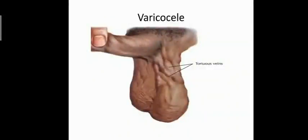Assalamu alaikum wa rahmatullahi wa barakatuh. This lecture is a combination of the previous lecture of the scrotum. The last lecture talked about the anatomy of the scrotum, embryology, undescended testes, and testicular torsion. We said in the last lecture we have five topics in the scrotum — two were clinical cases in the last year exam, and three were important topics for a clinician or doctor to diagnose early and treat as early as possible. We will take today the first two clinical cases: varicocele and hydrocele.